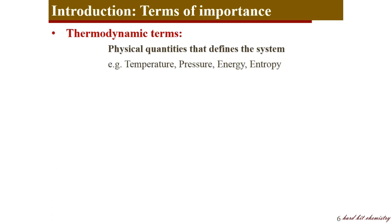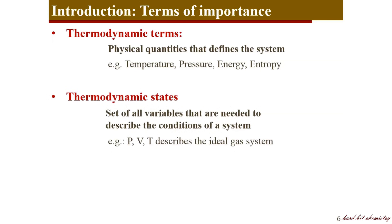If you have a system, you need certain quantities like temperature, pressure, and energy content. These quantities that define a system are called thermodynamic terms, and a set of these variables can describe the system completely — this set is called the thermodynamic state. For an ideal gas, if you know pressure, volume, and temperature, this forms the thermodynamic state, because knowing any two allows you to calculate the third, and knowing all three lets you calculate internal energy, enthalpy, and so on.